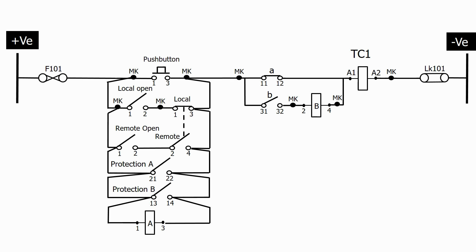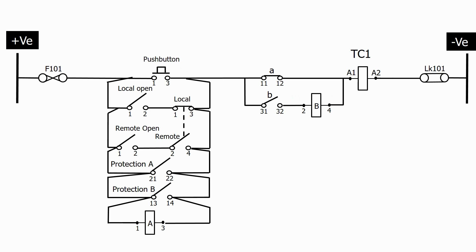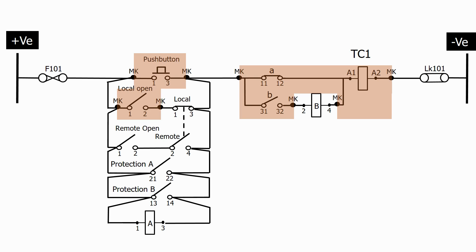Let's now look at a different type of circuit. Here we have a typical arrangement for the DC trip circuit. As we can see on this circuit, some of the wiring is routed back through a marshalling kiosk. This means that all of the wiring between the marshalling kiosk dots is sourced from that location.